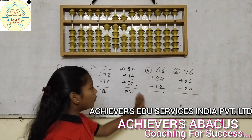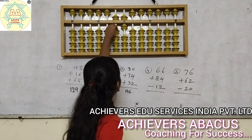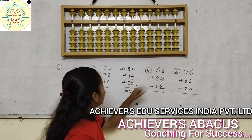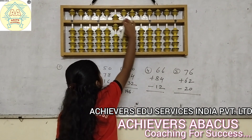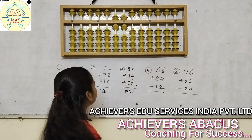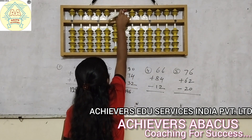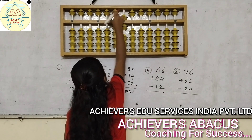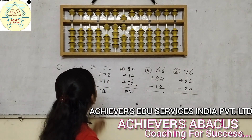Now we will go to the 4th sum. First we will clear the abacus. And then we will do add 66. Then we will add 84. Add 2, less 5. Add 3, less 5, add 10. This is the formula of add 8.